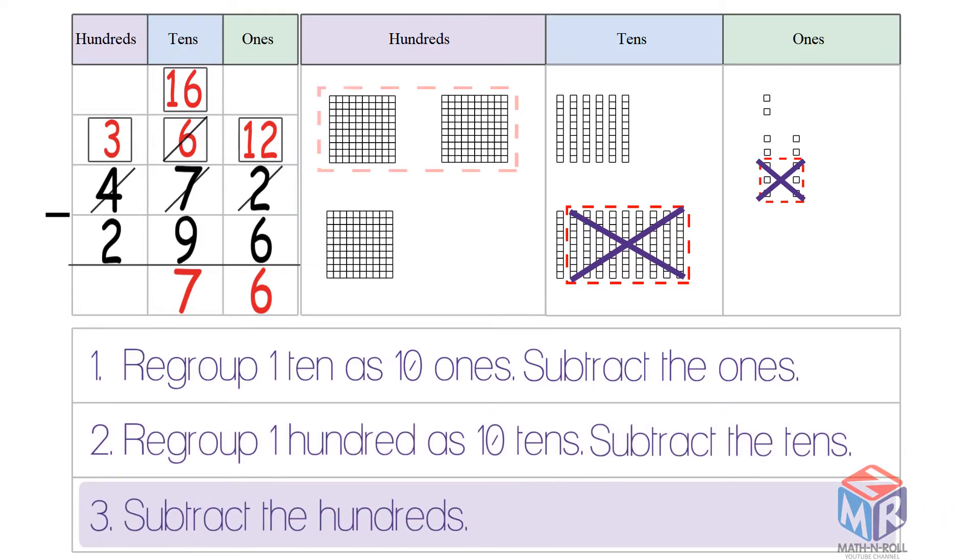3 minus 2 is equal to 1. So 472 minus 296 is equal to 176.